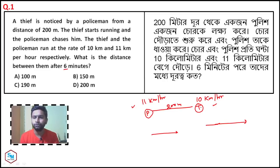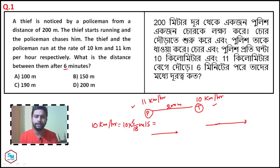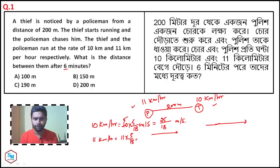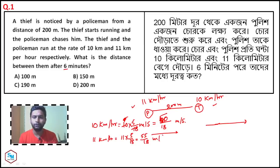The speed of the thief is 10 km per hour. Converting: 10 km/h equals 25 by 9 meters per second. For the policeman at 11 km per hour, the speed works out to a slightly higher value. So the car speed — the thief's speed — is 25 by 9 meters per second, and the policeman's speed is proportionally higher.